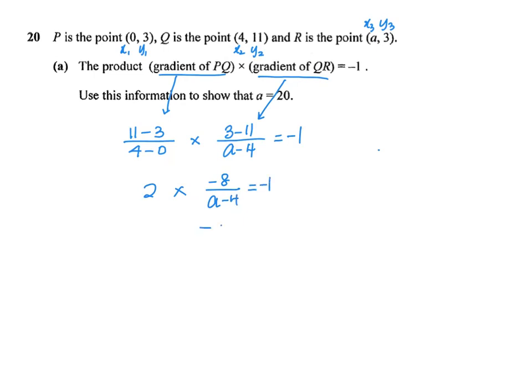If I were to keep this over here, cross-multiplying, I'll get negative 16 equals negative (a minus 4). That gives me 16 to be a minus 4, so a equals 20.